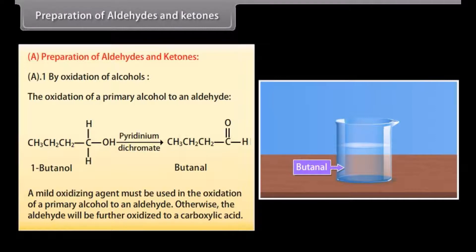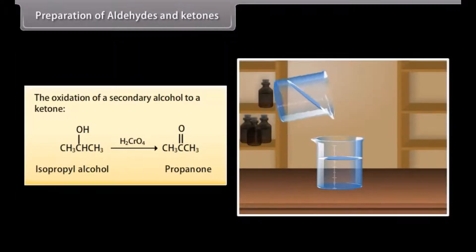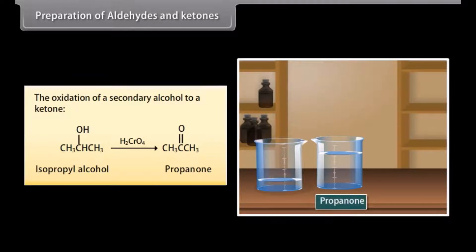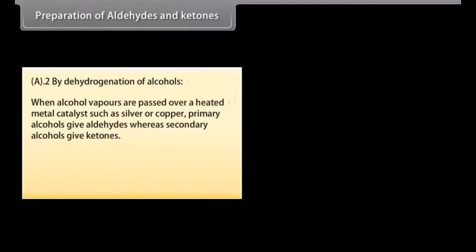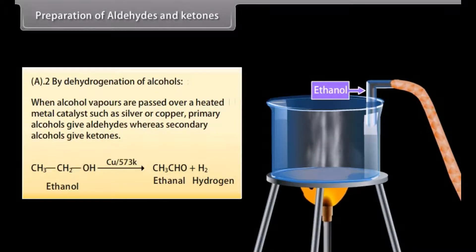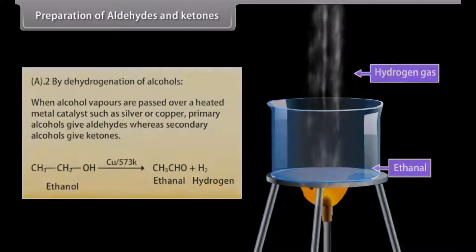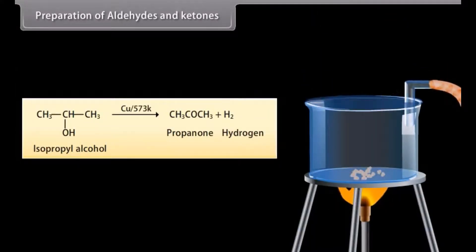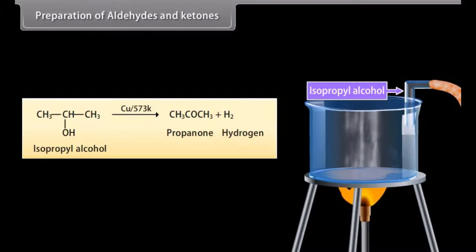Preparation of aldehydes and ketones. The aldehyde must not be further oxidized to a carboxylic acid. The oxidation of a secondary alcohol to a ketone: on adding chromic acid to isopropyl alcohol, propanone (a ketone) is formed. By dehydrogenation of alcohols: when alcohol vapors are passed over a heated metal catalyst such as silver or copper, primary alcohols give aldehydes whereas secondary alcohols give ketones. When vapors of ethanol are passed over copper, ethanal is formed and hydrogen gas is released. When vapors of isopropyl alcohol are passed over copper, propanone is formed and hydrogen gas is released.